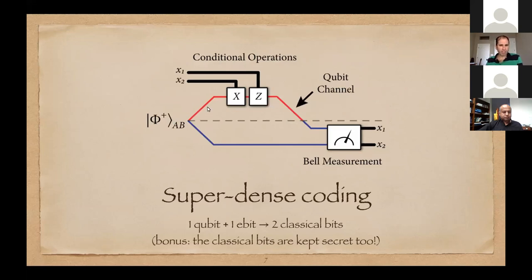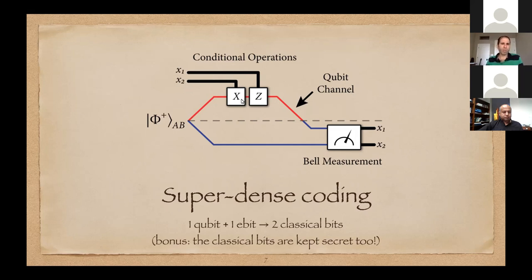Superdense coding: Alice and Bob are spatially separated, and we assume that some source has distributed to them this ebit state. Alice wants to communicate two bits to Bob, and she can do so by encoding these bits via Pauli operations. If bit X2 is zero she does nothing; if it's one she performs sigma X. If X1 is zero she does nothing; if X1 is one she performs Pauli Z. What's very interesting is that by these local operations, Alice can rotate the global state to one of the four orthogonal Bell states.